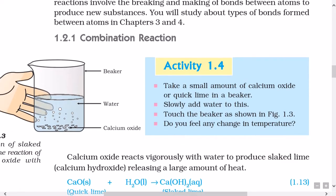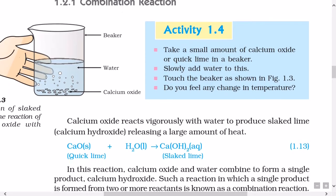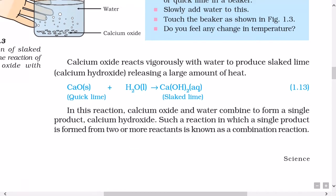1.2.1 Combination Reaction. Activity 1.4: Take a small amount of Calcium Oxide or quicklime in a beaker. Slowly add water to this. Touch the beaker as shown in figure 1.3. Do you feel any change in temperature? Calcium Oxide reacts vigorously with water to produce slaked lime, calcium hydroxide, releasing a large amount of heat.